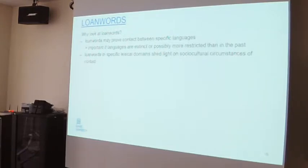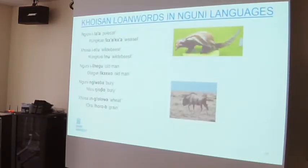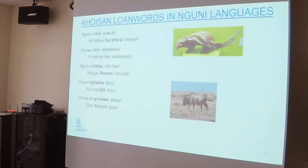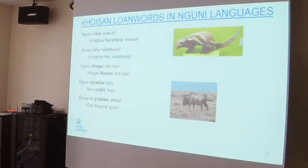What's also interesting is that if you have loanwords in specific semantic domains, this might tell you something about the kind of interactions between speakers of these two language communities. We see lots of loanwords in the Nguni languages — for instance, the Nguni word for a polecat was borrowed from a Khoisan language, as was the word for a wildebeest, which eventually ended up in Afrikaans as gnoe and then in Dutch — so Dutch has a Khoisan loanword through a number of intermediate steps. We also have the word for old man, for buried, for wheat — a variety of Khoisan borrowings in Nguni from different Khoisan languages.